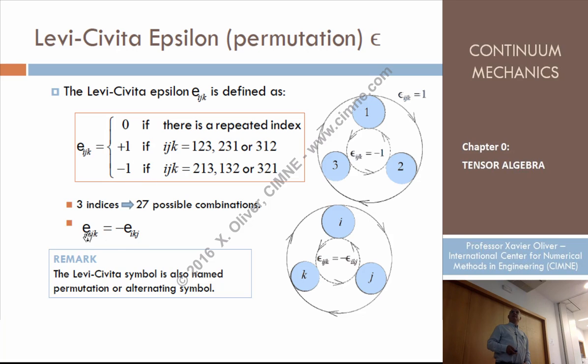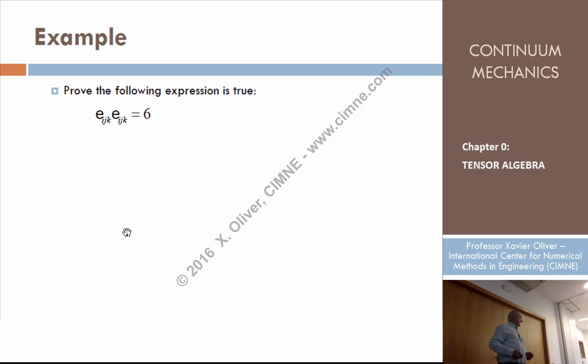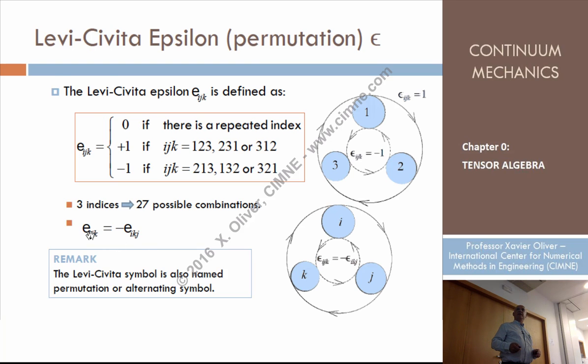Look that if I just change the order of two indices, for instance, JK, I just change KJ, then the sense moves from clockwise to anticlockwise, so then it changes the sign, okay? So changing one sign, changing the order of two indices, then interchanging two indices, then the result changes from one to minus one, or from minus one to one.